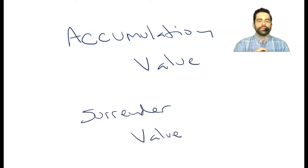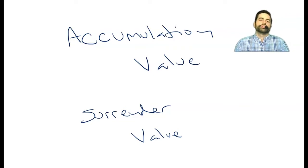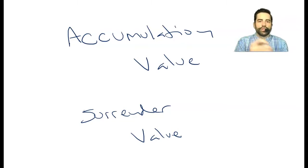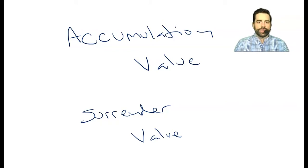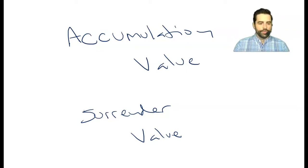Then you also have what's called a surrender value. Your surrender value is what you would have access to right away if you took everything out. All life policies and annuity contracts have surrender charges. For example, if I have $100,000 in accumulation value but my surrender charge is $2,000, my surrender value would be $98,000 — I can't access the full $100,000. Surrender value equals accumulation value minus surrender charge. Be careful: accumulation and surrender value are not always the same, especially in the early years of a 7- or 10-year surrender period.